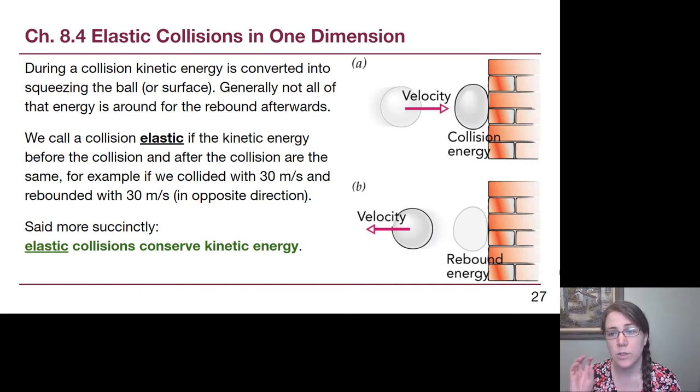So let's talk about these special types of collisions and what allows us to do extra problem solving when we know that that's the collision that's happening. We can call a collision elastic if it has the same amount of kinetic energy before as it does after. So for example, a ball that collides with a wall, the wall doesn't move. That means that the incoming velocity of that ball is equal and opposite to the outgoing velocity.